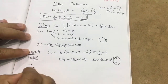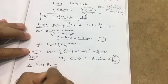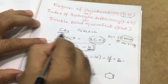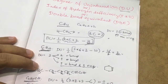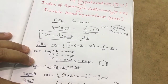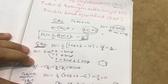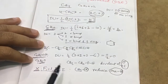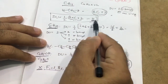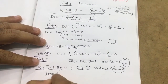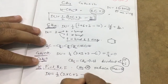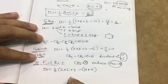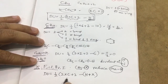Now consider halogens — fluorine, chlorine, bromine, iodine. Is this formula applicable? Taking CH3X: methane has 4 hydrogens, but here only 3 hydrogens — meaning one halogen reduces one hydrogen. So each halogen decreases hydrogen count by one. Therefore the formula becomes: DU = ½(2C+2 − H + X), where X is the number of halogens, since halogen reduces one hydrogen.